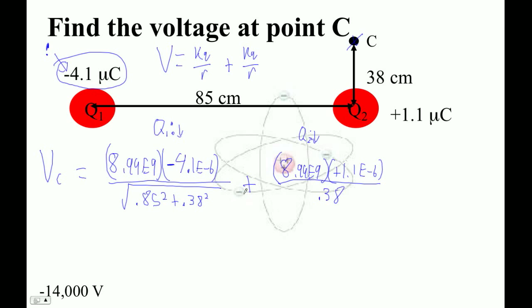So 8.99 E9 times—I'm going to add this in here. Negative 4.1 times 10 to the minus 6, right? Divided by,